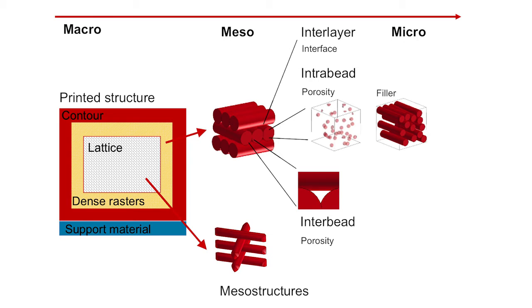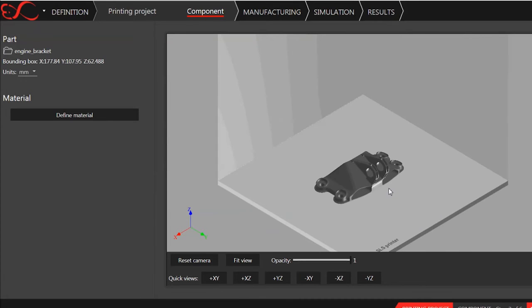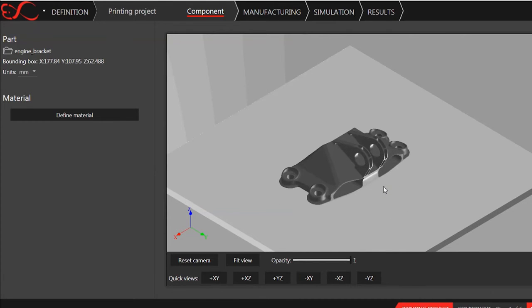Digimat AM relies on advanced micromechanics and multi-scale thermomechanical models to solve the simulation problem of additive manufacturing of polymers and composites. Numerical predictions of warpage need to account for the process parameters, the material characteristics, and the printing strategy.